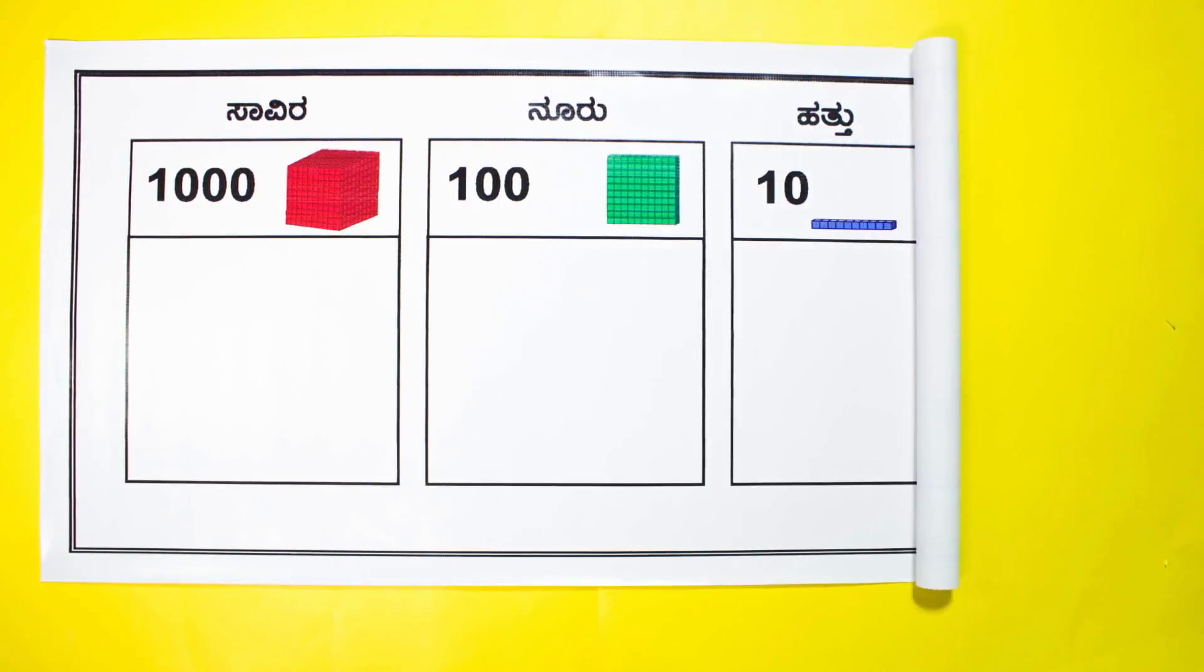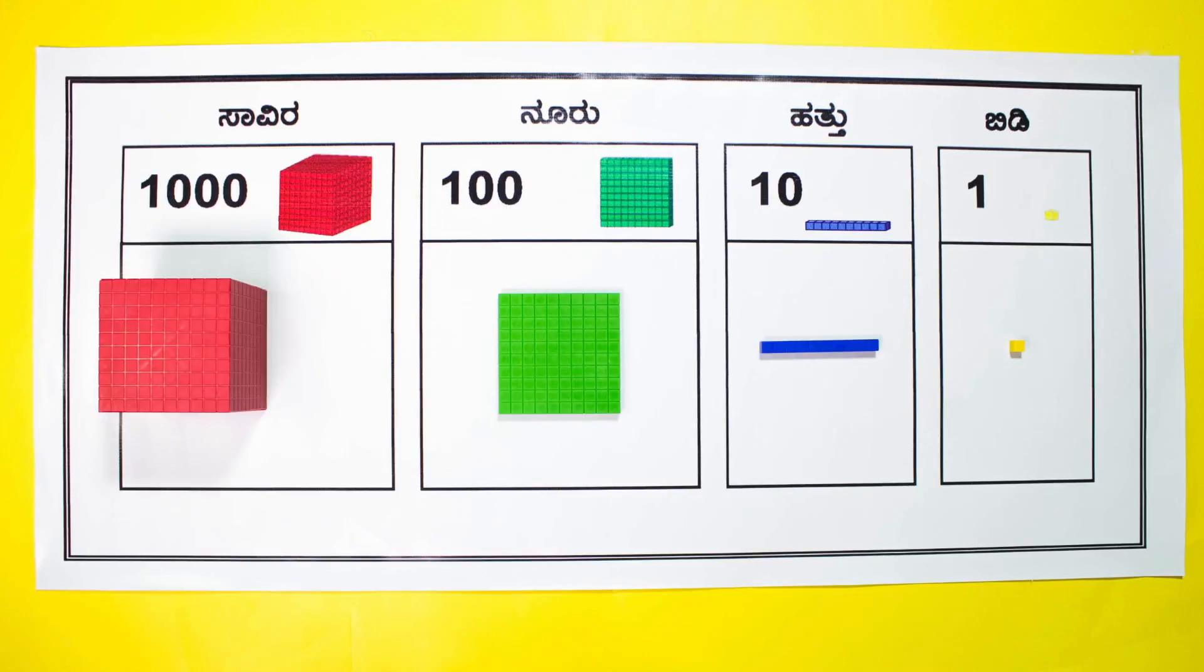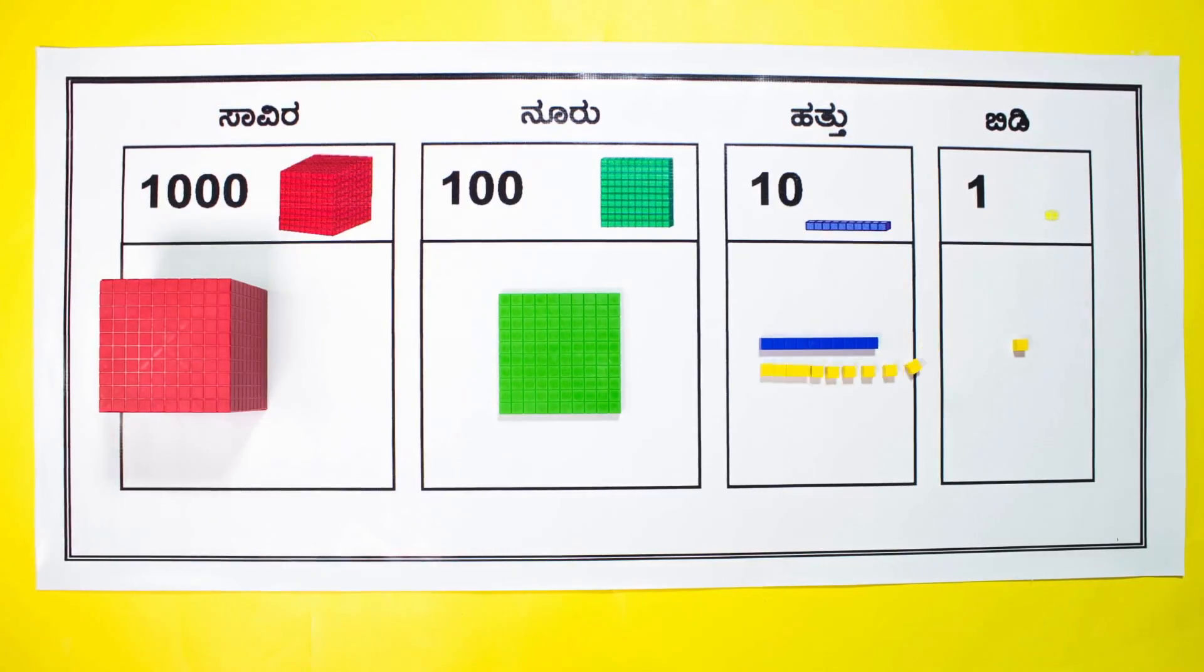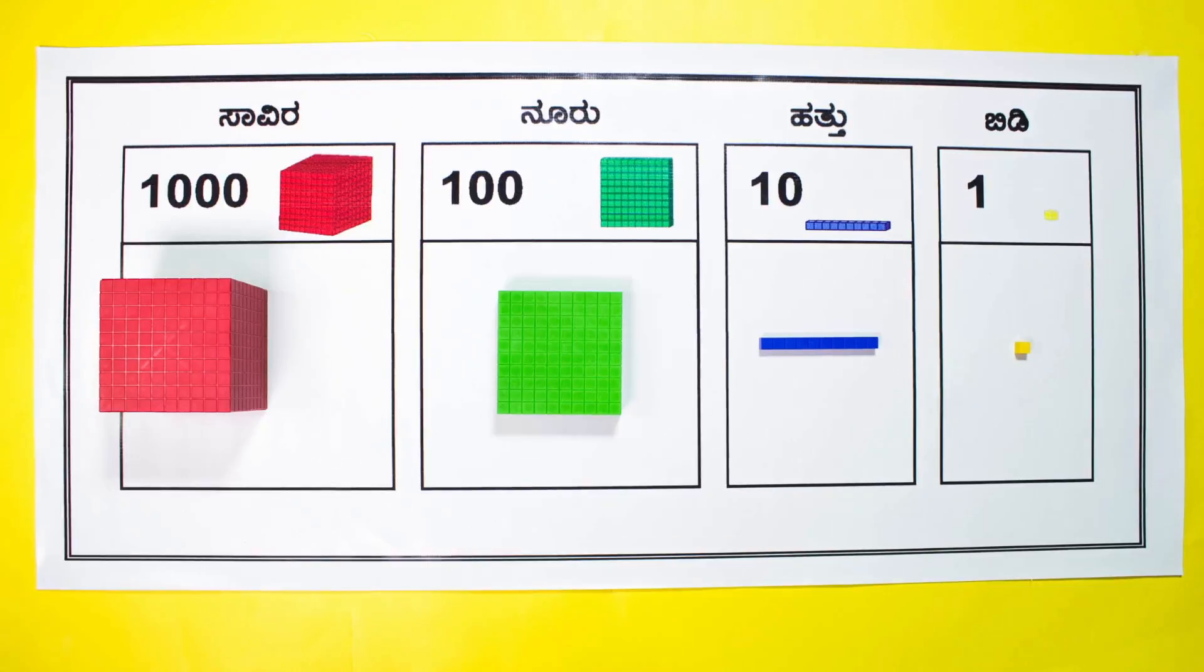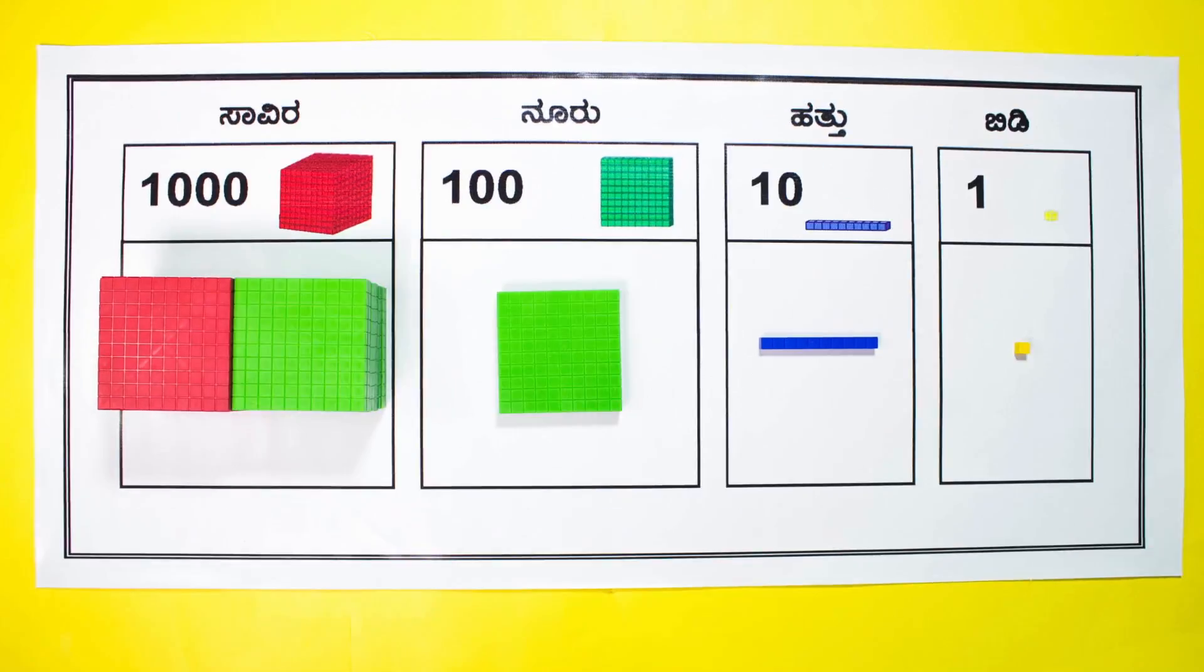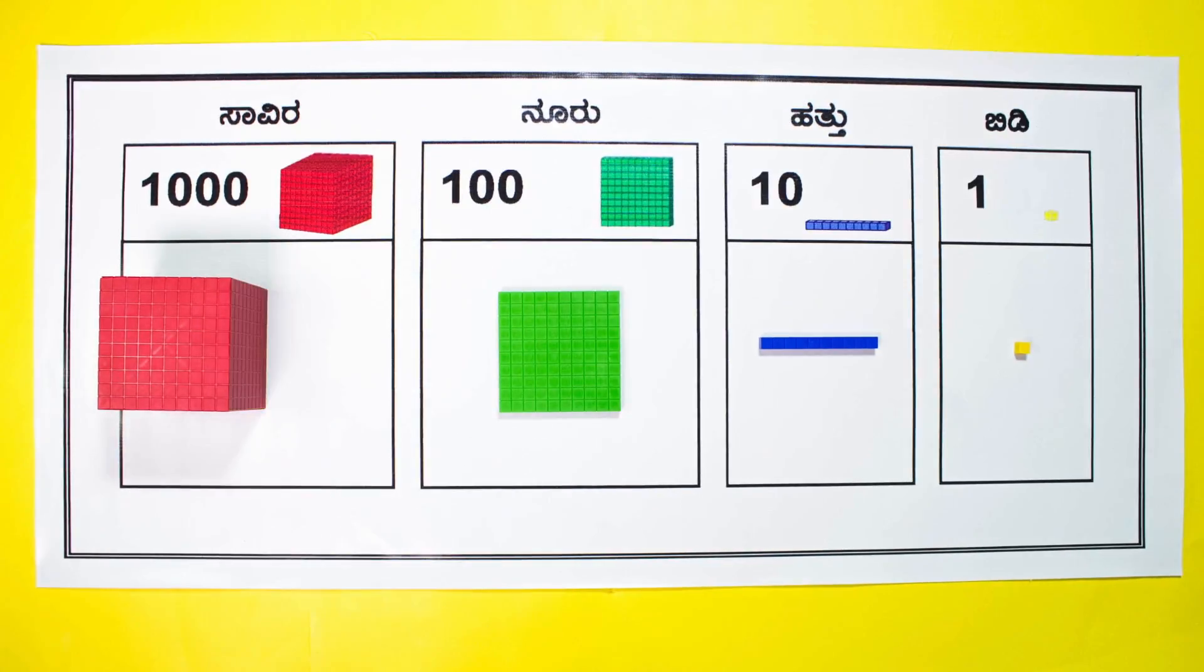Let us use the place value mat and base 10 blocks to show two-digit subtraction. Here is a quick introduction to the base 10 blocks. Each yellow cube represents 1 unit. 10 small cubes are equal to 1 blue rod of 10. 10 blue rods equal 100 or 1 green plate. 10 green plates equals 1000 or 1 red cube.